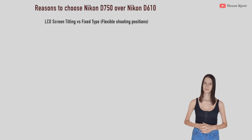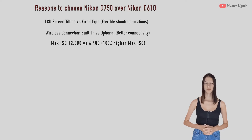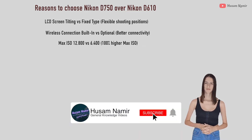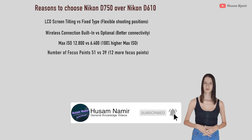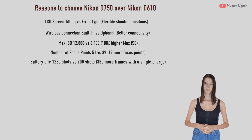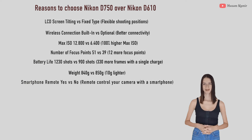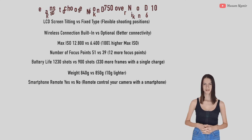Now we will talk about reasons to choose Nikon D750 over Nikon D610. It has a tilting screen and wireless connection. It has 100% higher max ISO and 12 more focus points. It has 330 more frames with a single charge, is 10 grams lighter in weight, and has smartphone remote capabilities.